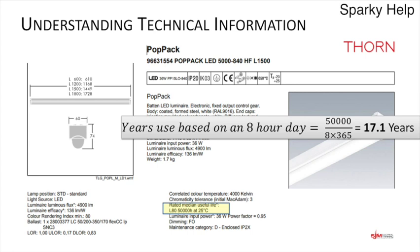Let's look at rated median useful life - on average how long will it last. This manufacturer says L80, 50,000 hours at 25°C. That means after 50,000 hours at 25°C, 80% of the light will still be given out. Based on an 8-hour day, that calculation is 50,000 divided by 8 hours, divided by 365 days, equals 17.1 years. That's a pretty long time. In theory, these will last a long time, probably outlive the building itself.